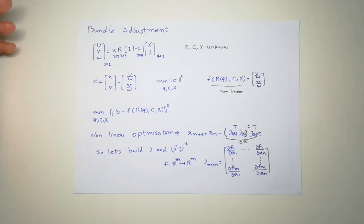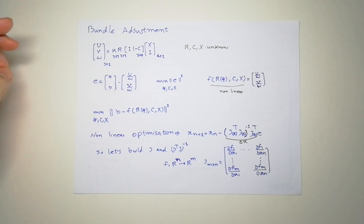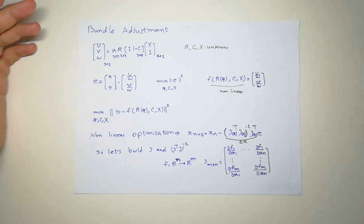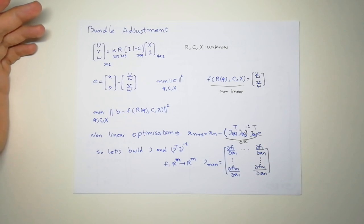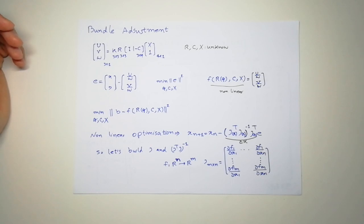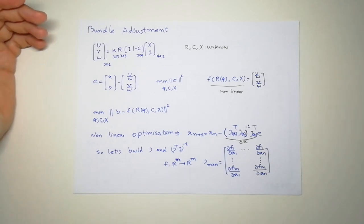In this video I'm going to talk about bundle adjustment. The problem is we have a bunch of points in 3D whose positions we don't know, and if we project them into the plane of the camera and we took several photos, we are interested to find the position of the points in 3D.